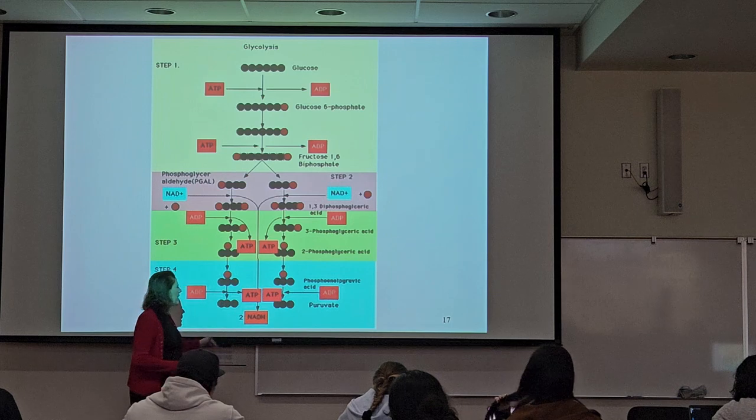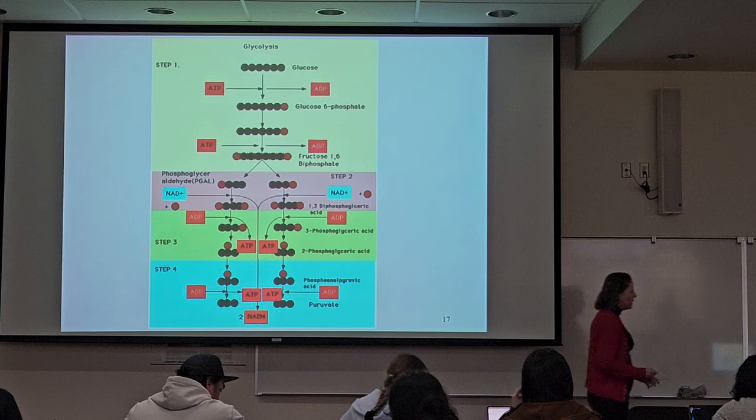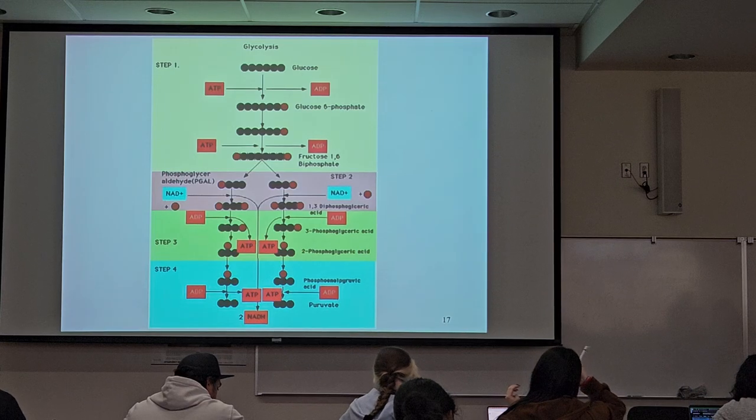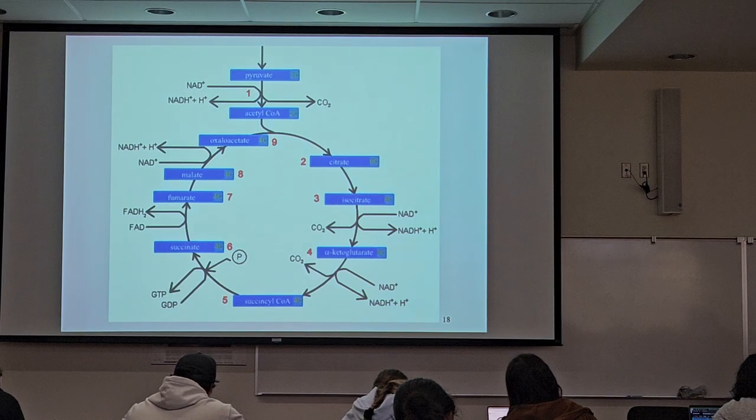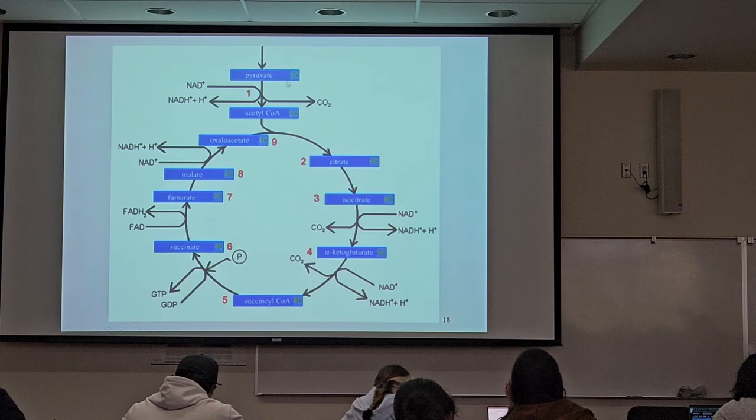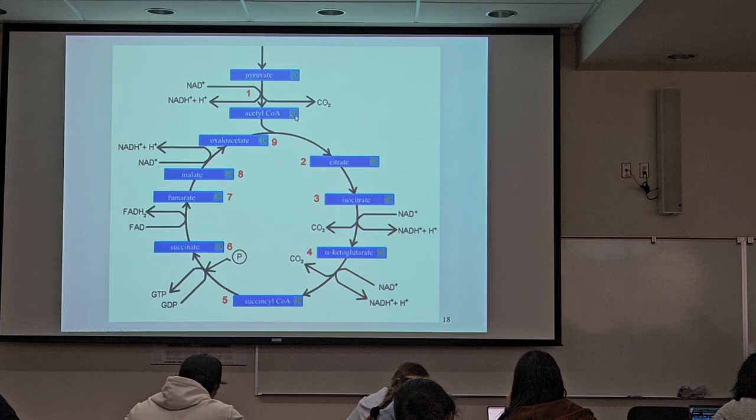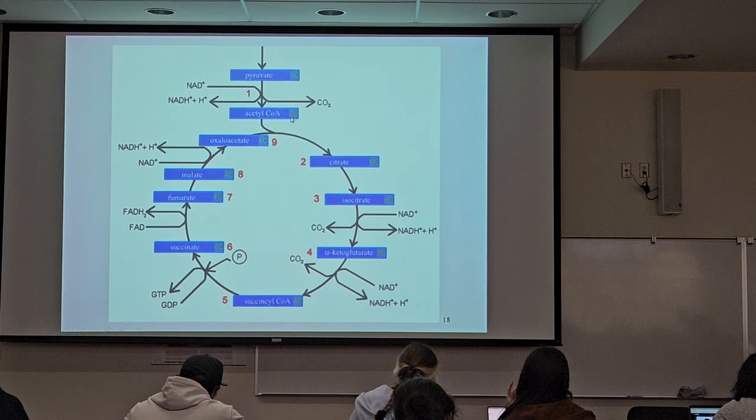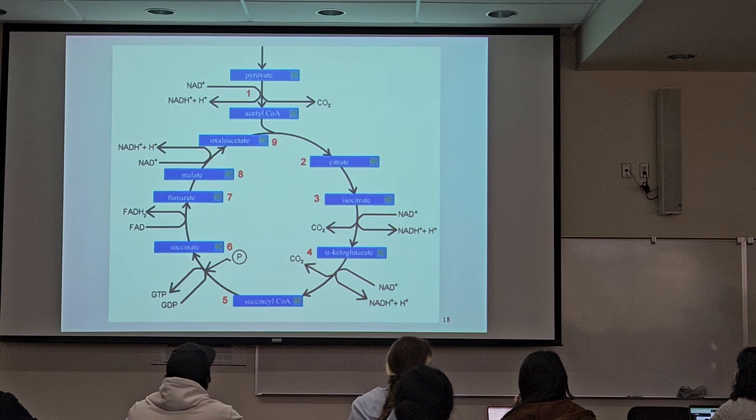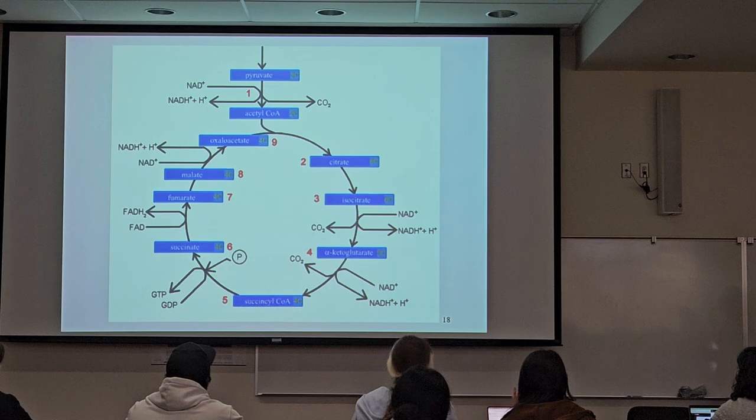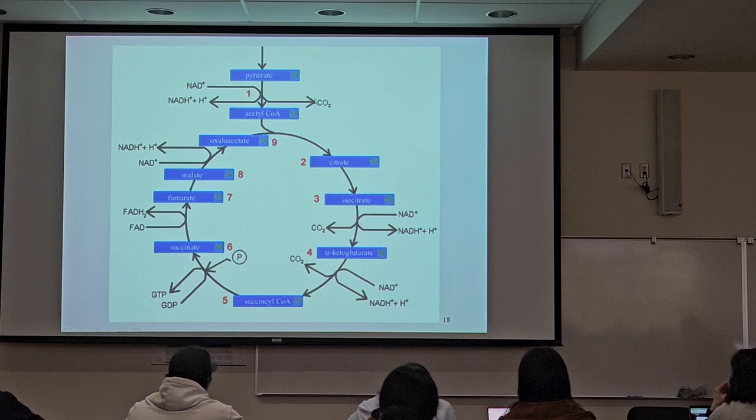But what happens next is pyruvate is going to be broken down even further. We have two of everything from here on out. And pyruvate, this is showing you how many carbons we have for each of these. So pyruvate has three carbons, and then pyruvate is converted to acetyl CoA, which only has two carbons that were originally glucose left. What happened to the third one? Carbon dioxide. See that at the top? So this is what he's breathing out.